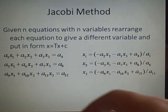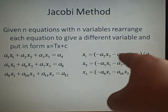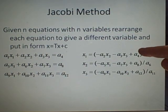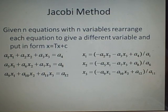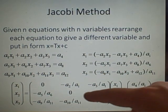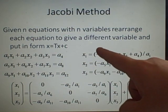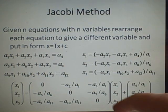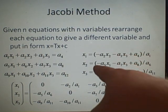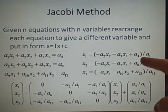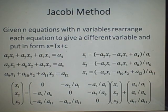We rearrange the first equation to give x1, the second to give x2, and the third to give x3. You move everything to the other side and divide by whatever constant is in front. It's useful to put the constant without a variable at the end. Then you can put it in the matrix form: the T matrix has no x1 on that side — just the coefficients like minus a2 over a1 for x2 and minus a3 over a1 for x3, with the constants a4 over a1, a8 over a6, a12 over a11 added.